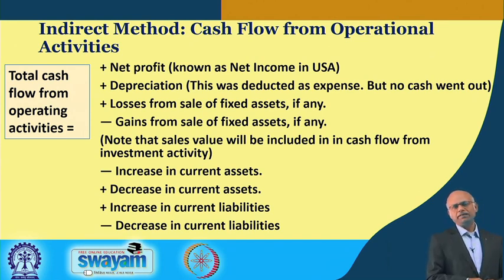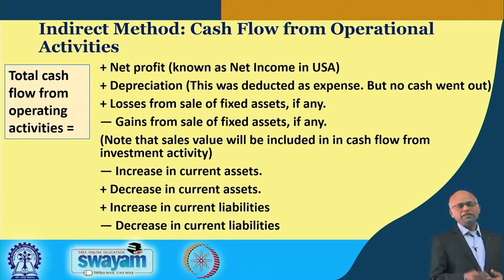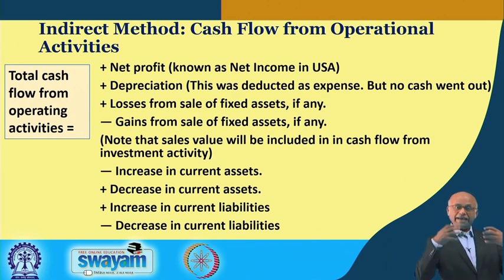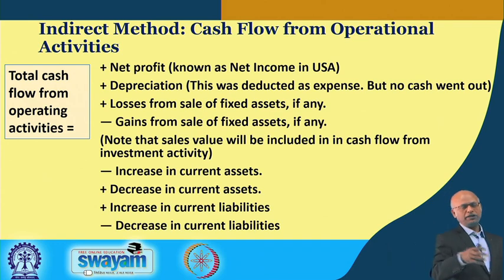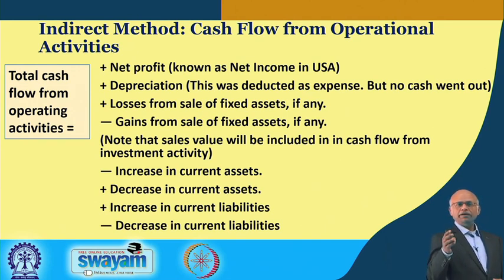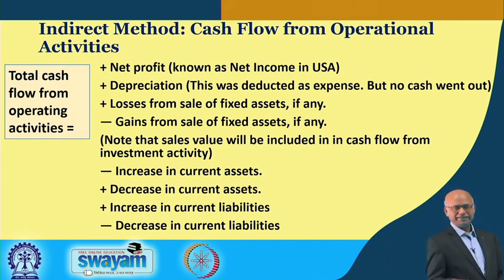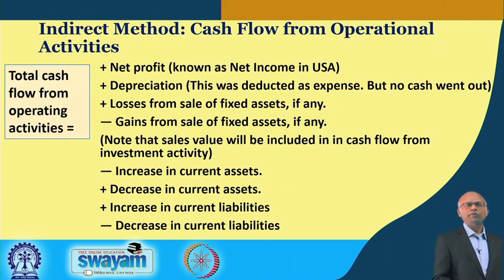Then: any increase in current asset is deducted and any decrease in current asset is added. Why? Because an increase in current asset is an application of money — it has consumed some cash, so cash has gone out, hence it is deducted. If current assets go down, some cash has come in because you have sold them off — so cash has come in and it is added. Similarly: add decrease in current asset, minus increase in current asset, plus increase in current liability, minus decrease in current liability — the total net value is your cash flow from operating activities.